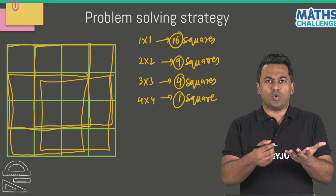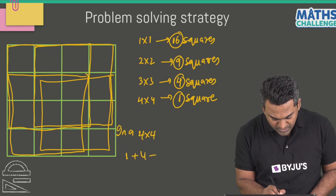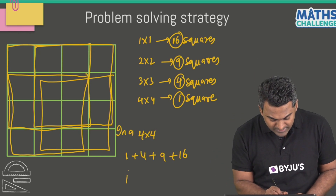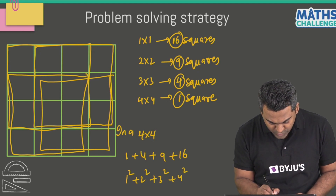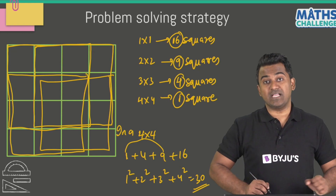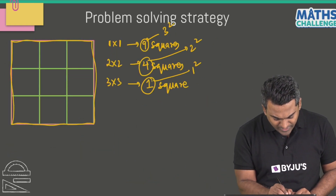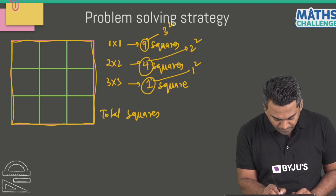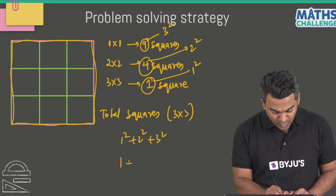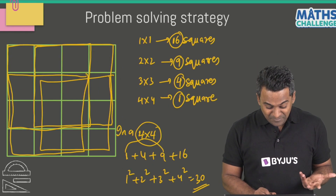I believe you've understood the pattern — these are all square numbers: 1 squared, 2 squared, 3 squared, 4 squared. If we add up the total squares in a 4 by 4 grid: 1 + 4 + 9 + 16, which can be written as 1² + 2² + 3² + 4². That gives us a total of 30 squares. And for a 3 by 3 square grid, the total is 1² + 2² + 3² = 1 + 4 + 9 = 14 squares.